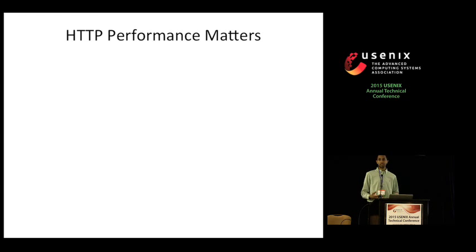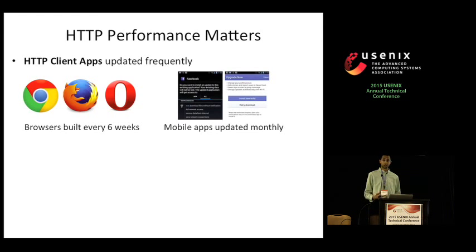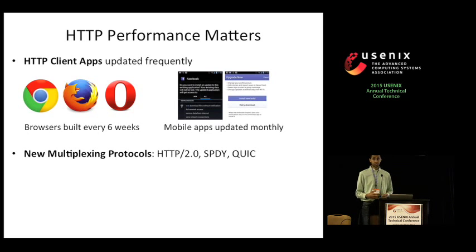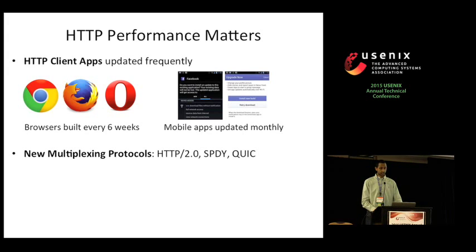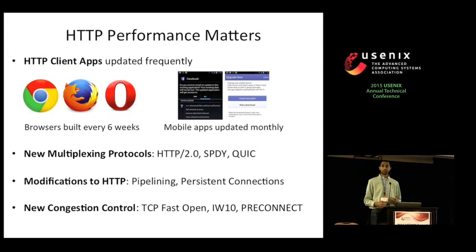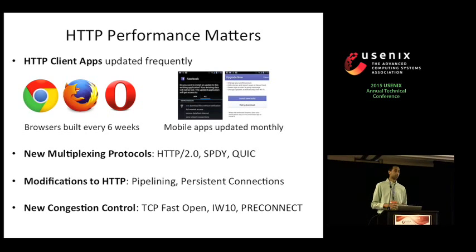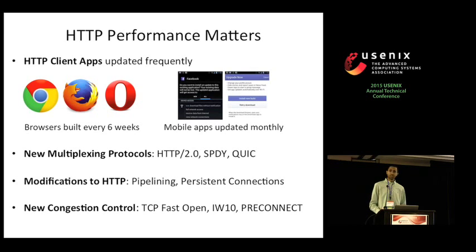Given the prolific use of HTTP, there's been quite a bit of work done at multiple layers to improve the performance of HTTP applications. Client applications themselves are updated quite frequently — many popular browsers offer updates roughly every six weeks. There have also been new multiplexing protocols like Google's SPDY and QUIC, as well as proposals to modify HTTP and TCP at the transport layer to better suit specific HTTP application workloads.